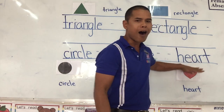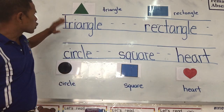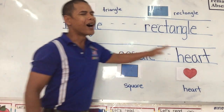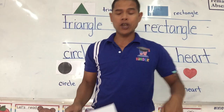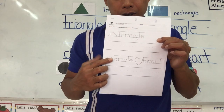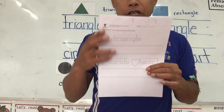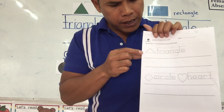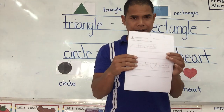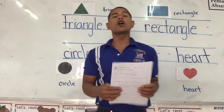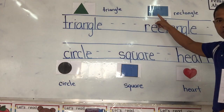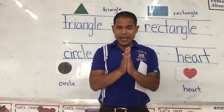Let's read them all together: triangle, rectangle, circle, square, heart. Excellent job! In your worksheet for today, trace triangle, circle, and heart. Once you get done tracing, write the word out. Remember: top line, middle line, bottom line — not too small and not too big. That brings us to the end of our lesson on shapes. I will see you in the next lesson. Bye bye!